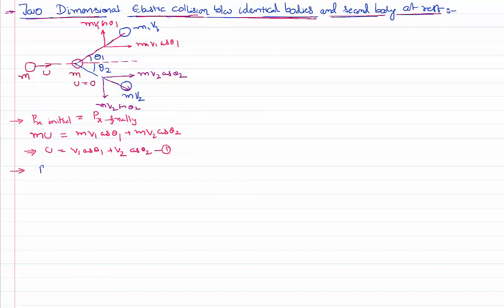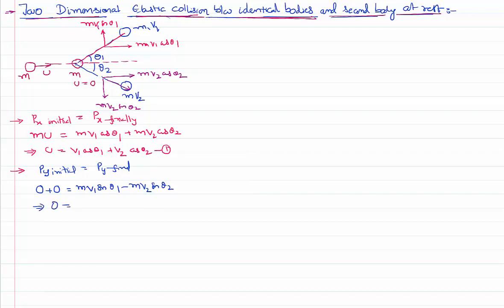Now equating momenta along the y-axis: initial y-momentum equals final y-momentum. Initially, the first body moves along the x-axis so has no y-momentum, and the second body is at rest, so total initial y-momentum is zero. Finally, the first body has mv1 sin theta 1 upward and the second body has mv2 sin theta 2 downward. Being opposite, we get: 0 = v1 sin theta 1 − v2 sin theta 2. Call this Equation 2.